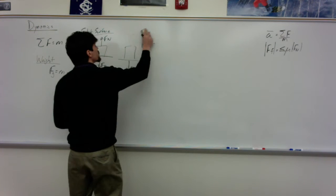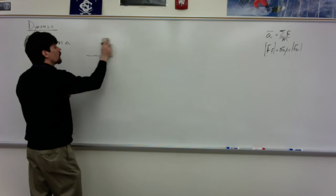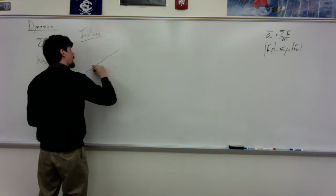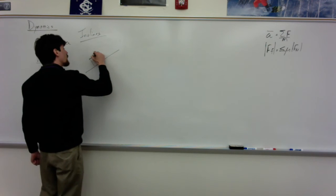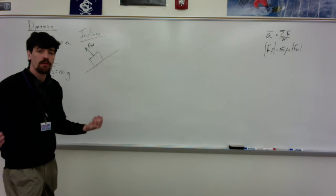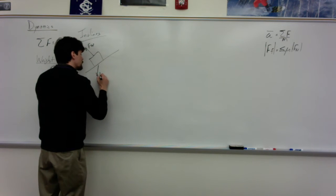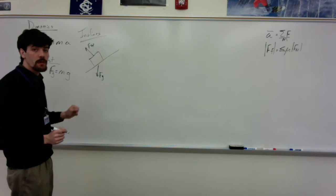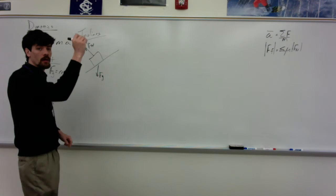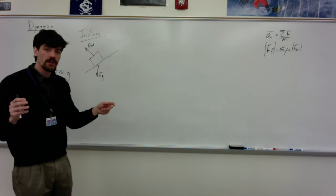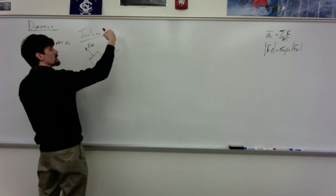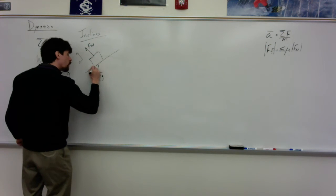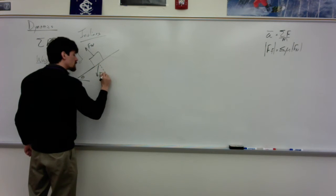Force normal does not always need to be directed upward — that comes from inclines. On an incline, force normal is directed perpendicular to the surface. The problem is force gravity is directed straight downward. Because these two things are on different planes, instead of defining up and over as positive, we go ahead and use down-the-plane and perpendicular-to-plane as our positive directions.